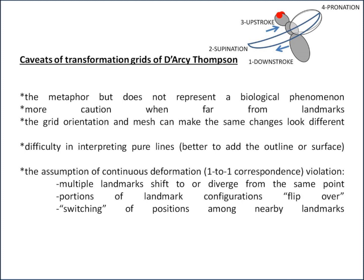Grid orientation can make the same changes look very different, so you need both the original starting grid and the finished target grid. Similarly for grid meshes, if few or no lines pass through the region of greatest change, you are missing a lot of information. With pure lines it is also difficult to interpret without anatomical reference, so it is better to add an outline or surface. However, be careful not to draw structures that have no landmarks at all — for instance, drawing the beak of a bird when no landmarks on the beak have been digitized.